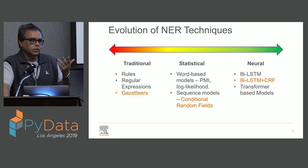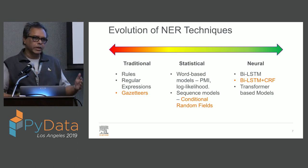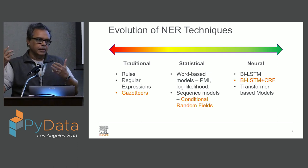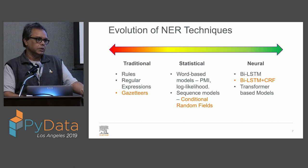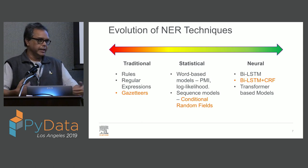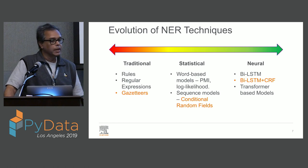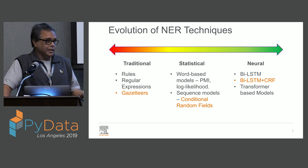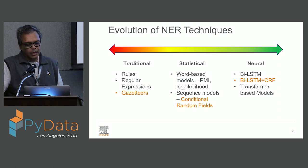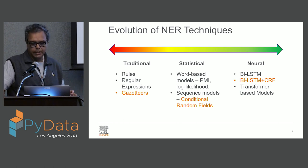For statistical approaches — for those of you who come from the search side — you're looking for sequences of words whose empirical probabilities are higher than if you multiplied the probabilities of the individual words together. If you multiply the probabilities it means they're independent, so if the empirical probability is higher, that's an entity of interest. There are also sequence models, of which the most popular one is conditional random fields, which we will talk about slightly later.